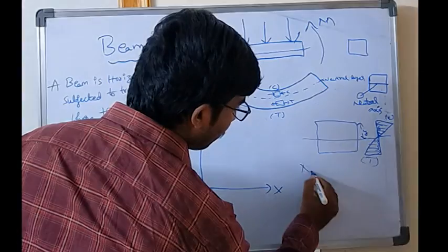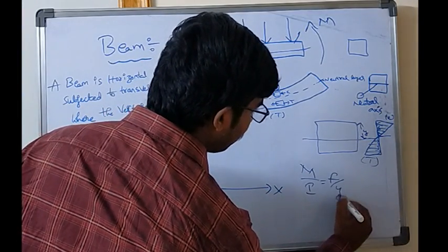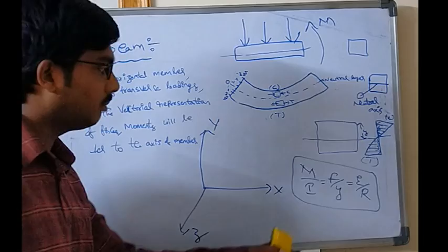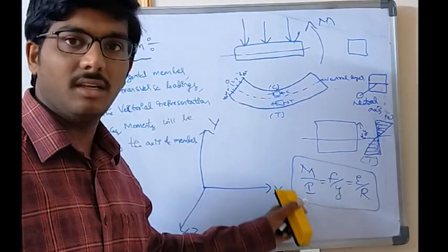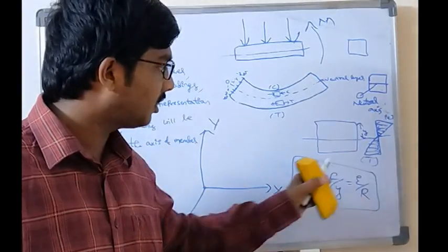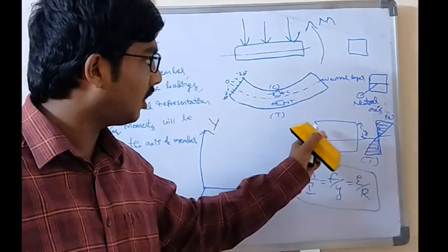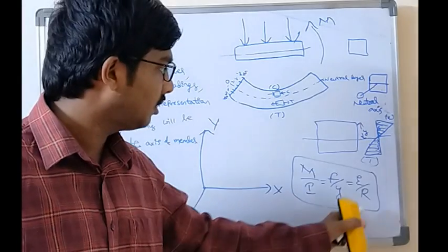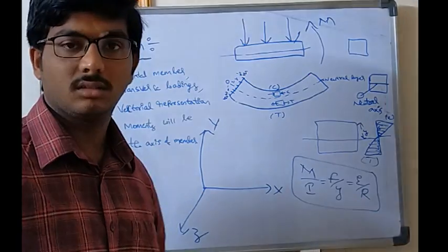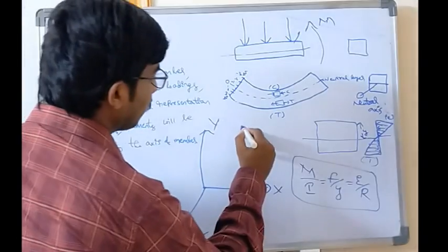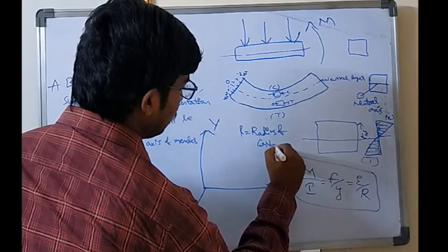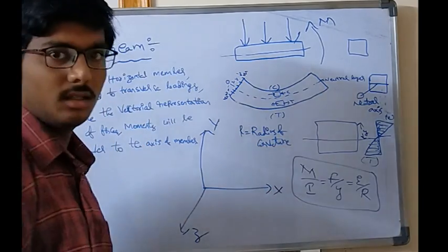The main equation to find bending stress: M/I = F/Y = E/R. This is known as the bending equation or flexure equation. Here, M is the bending moment, I is the moment of inertia, F is the bending stress, Y is the distance of the topmost fibers from the neutral axis, E is Young's modulus, and R is the radius of curvature.